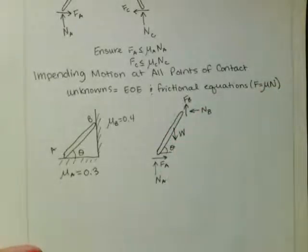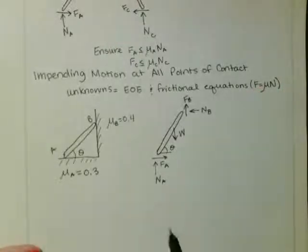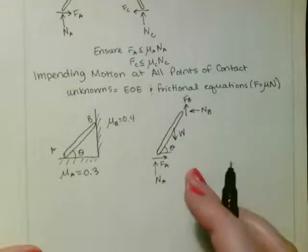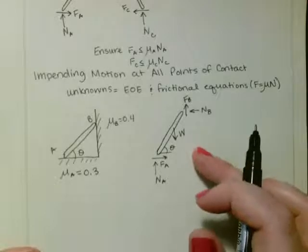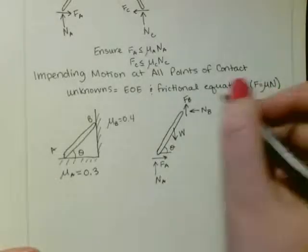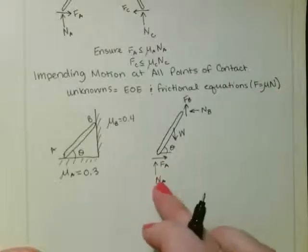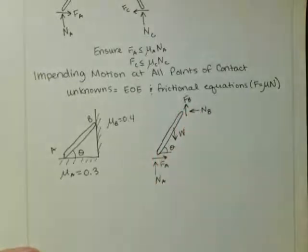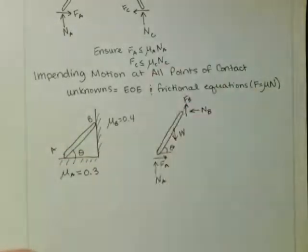Okay. So in this, we've got NB, FB, theta, FA, and NA. So that's one, two, three, four, five unknowns. And we can have three equations of equilibrium for this free body diagram. And then we can have two more equations from our frictional equations, right? We can have FA is equal to mu A NA. And we can have FB is equal to mu B NB. And so using all of those equations, we can solve.